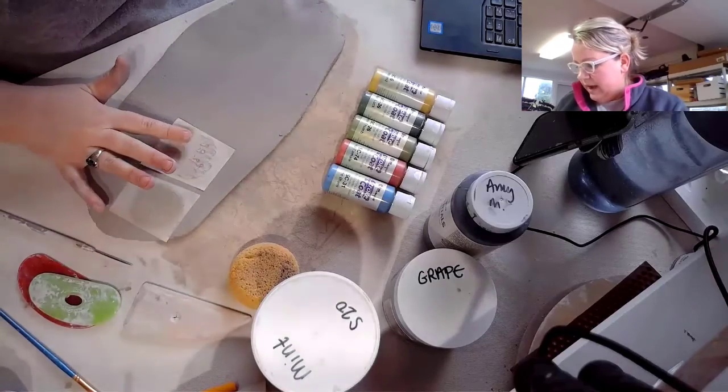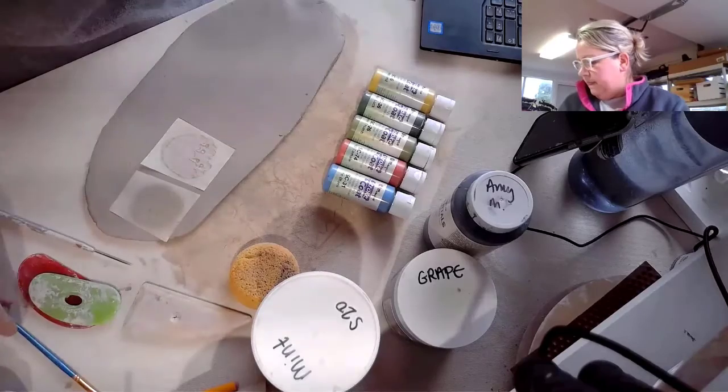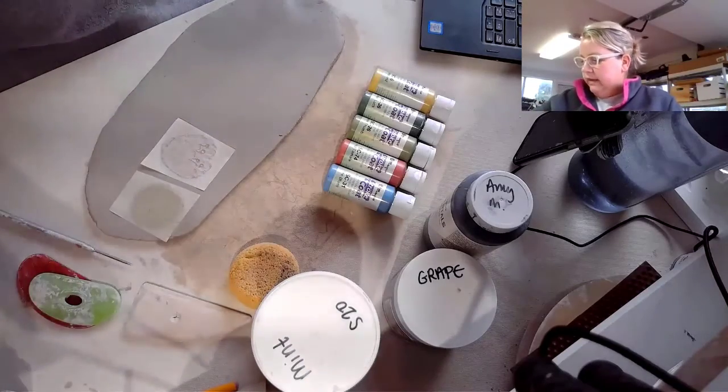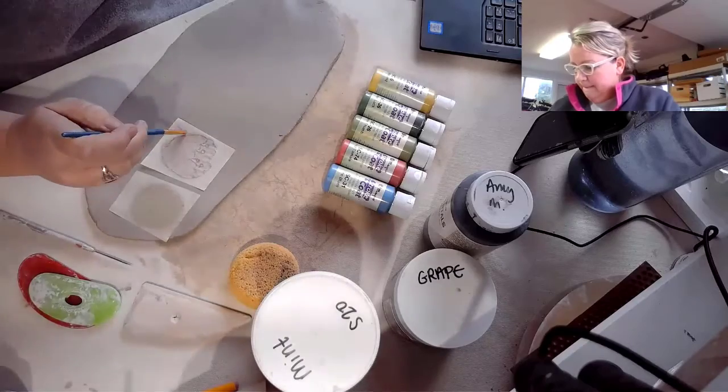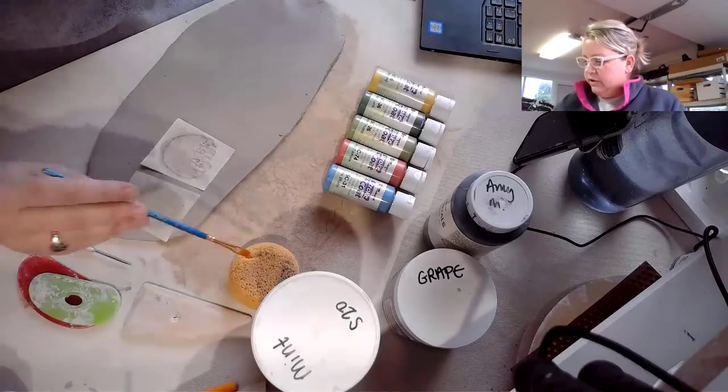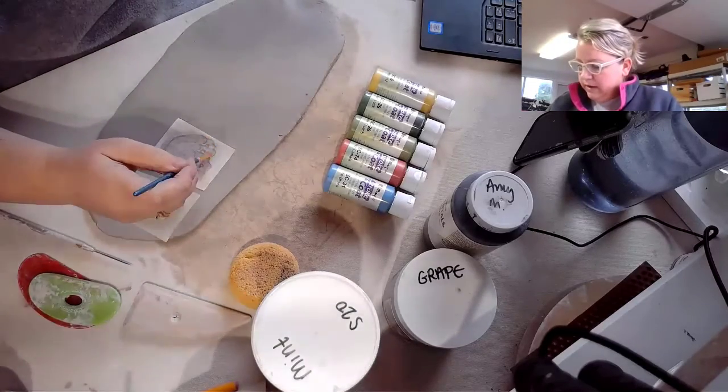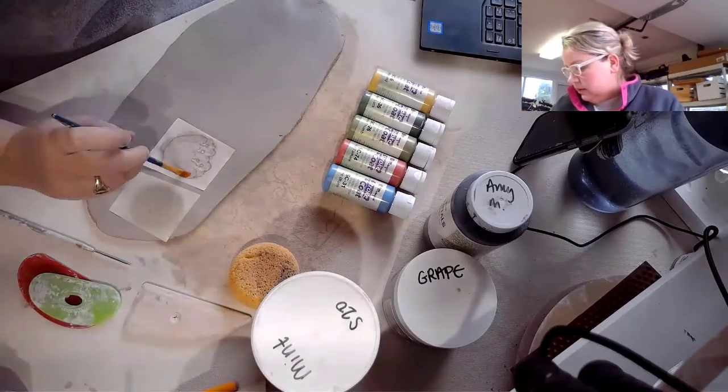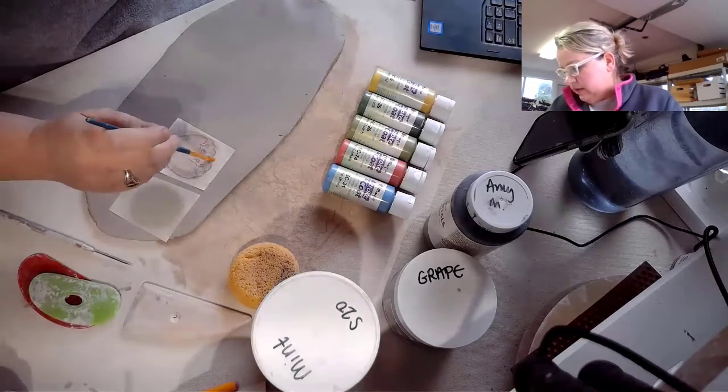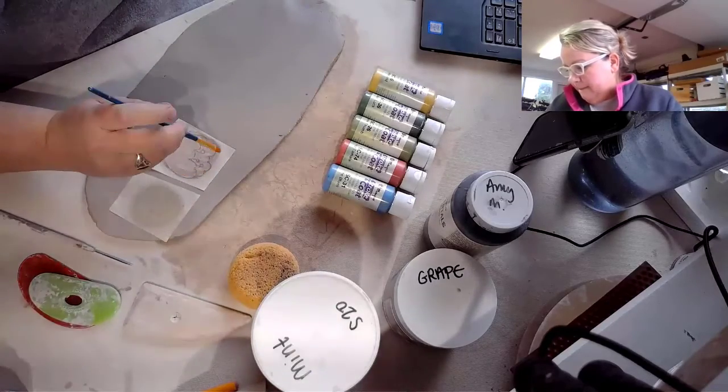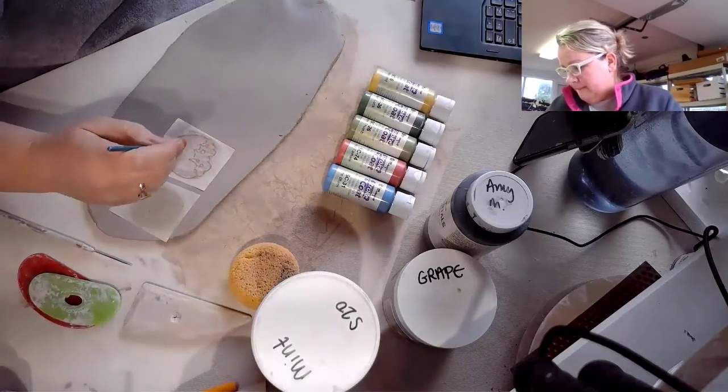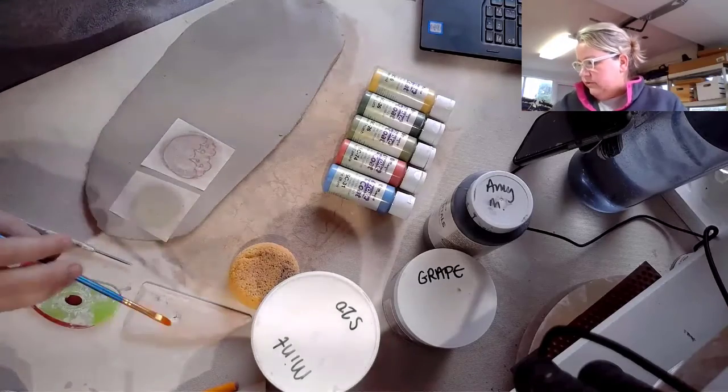So once I have that stuck on there, again, I'm going to take my paintbrush and just go around the edges. I like going around the edges because usually if the edges are stuck down, then everything else is going to transfer pretty smoothly. Just paint over all that.